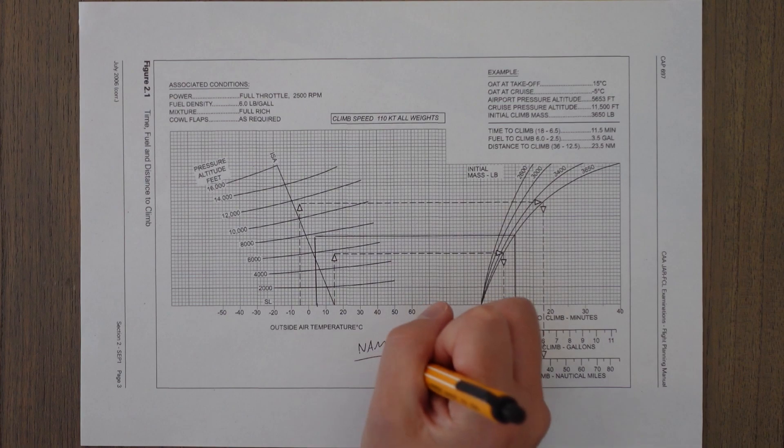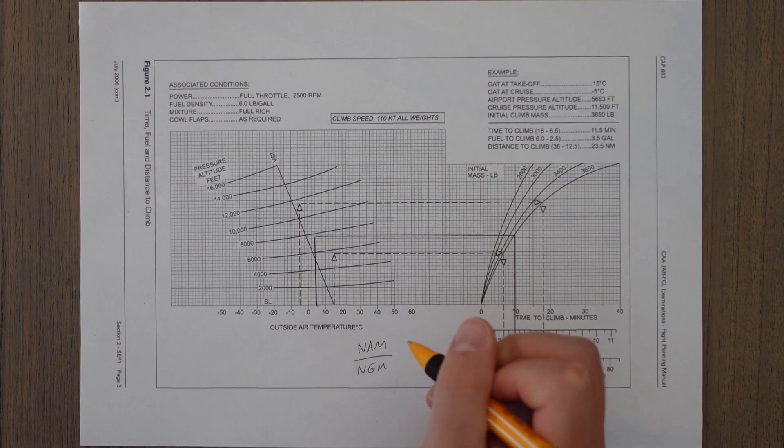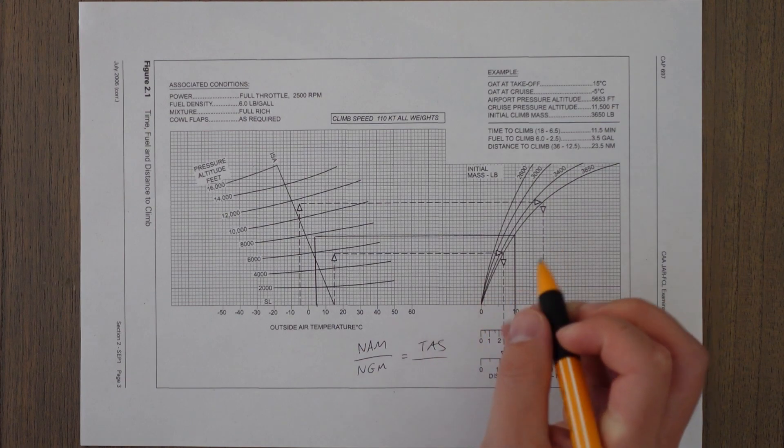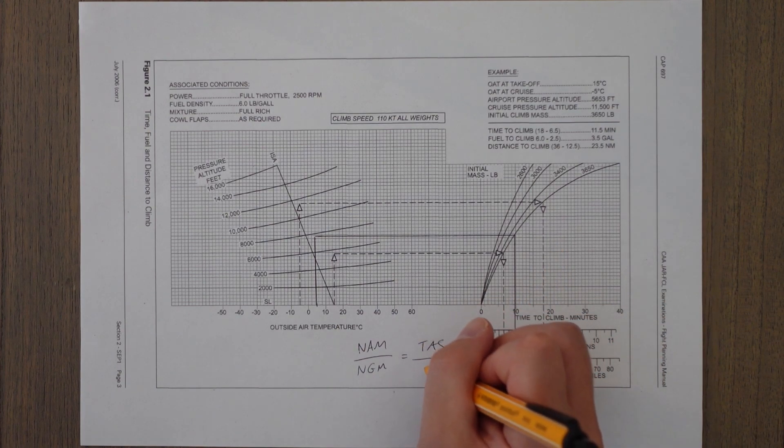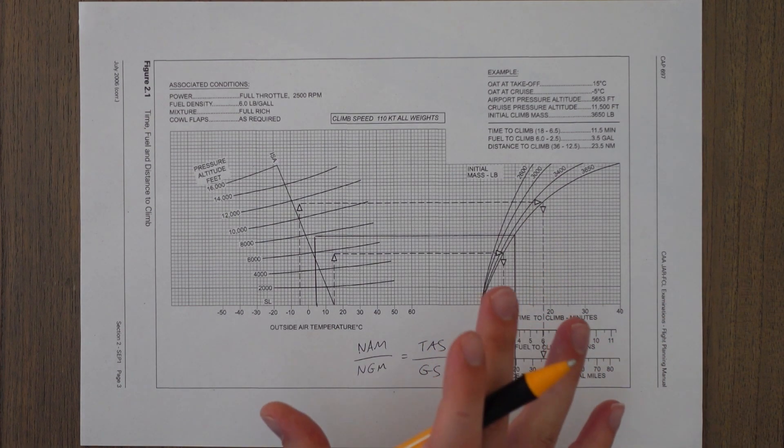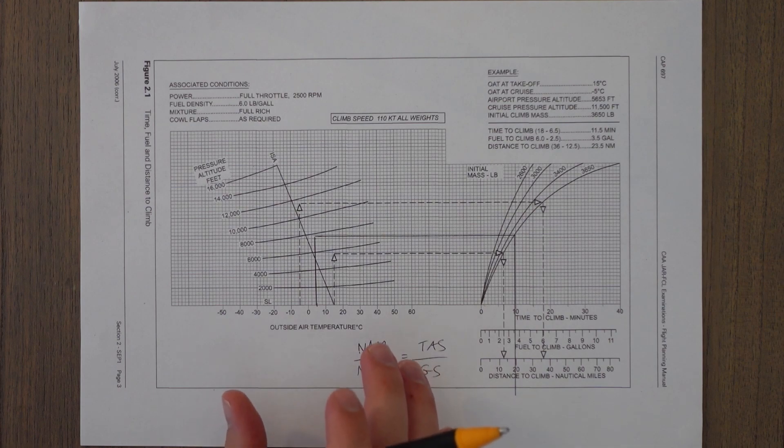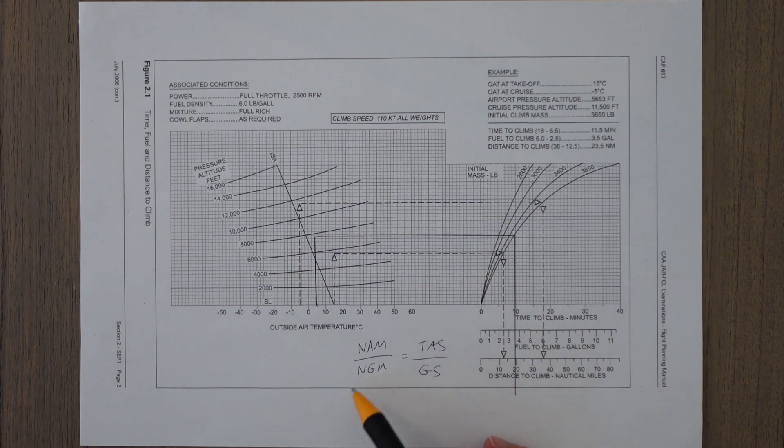Because the distance we cover will be proportional to the difference between the true airspeed and the ground speed, we can create a simple equation: nautical air miles over nautical ground miles equals the true airspeed over the ground speed. So 19 over the nautical ground miles equals 110 over 90. When we solve that equation, our nautical ground miles covered would be about 15 or 15.5.